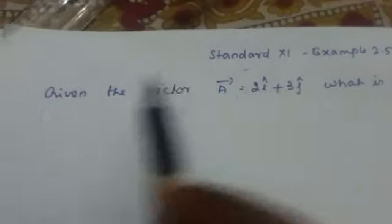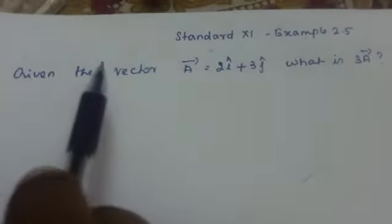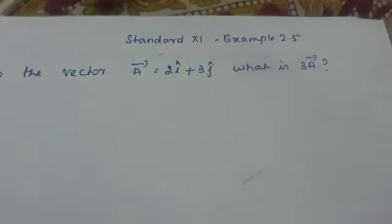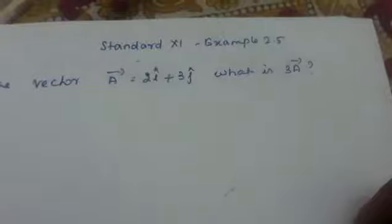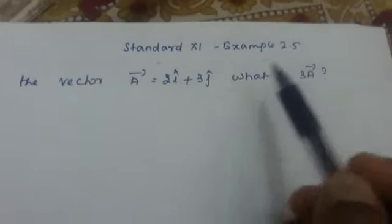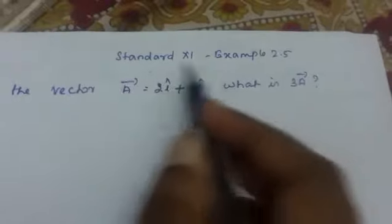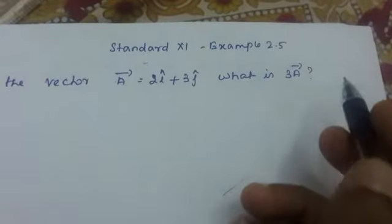Standard 11, Example 2.5. Given the vector a⃗ is equal to 2i⃗ plus 3j⃗, what is 3a⃗? Here we have to find 3a⃗. What is given is a⃗.